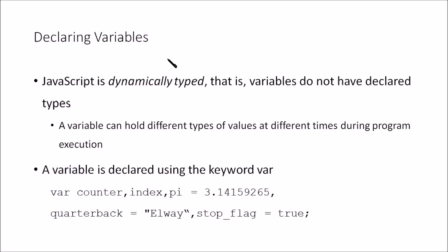Next, how can you declare variables in JavaScript? JavaScript is actually a dynamically typed language — the variables do not have to be declared with a specific type. A variable can hold different types of values at different times during program execution. For example, 'quarterback = "Elway"' makes it a string type variable, 'stopFlag = true' makes it a boolean, and counter, index, and pi variables are of number type.